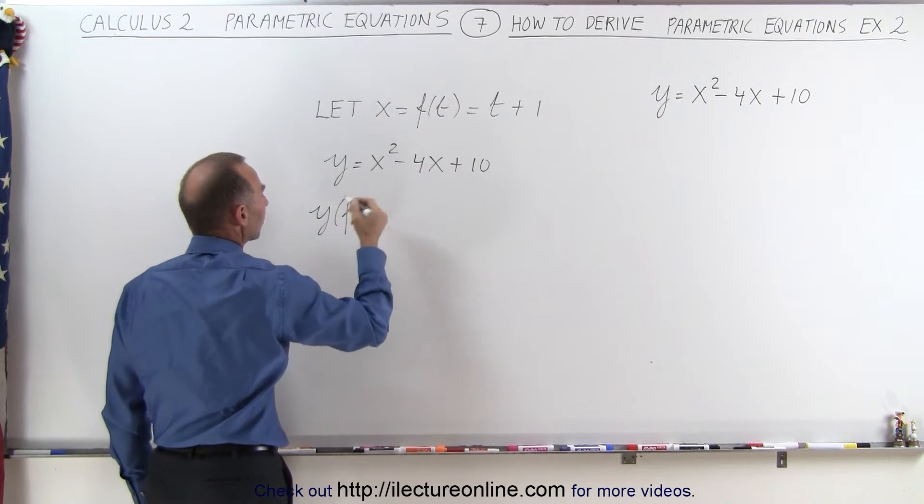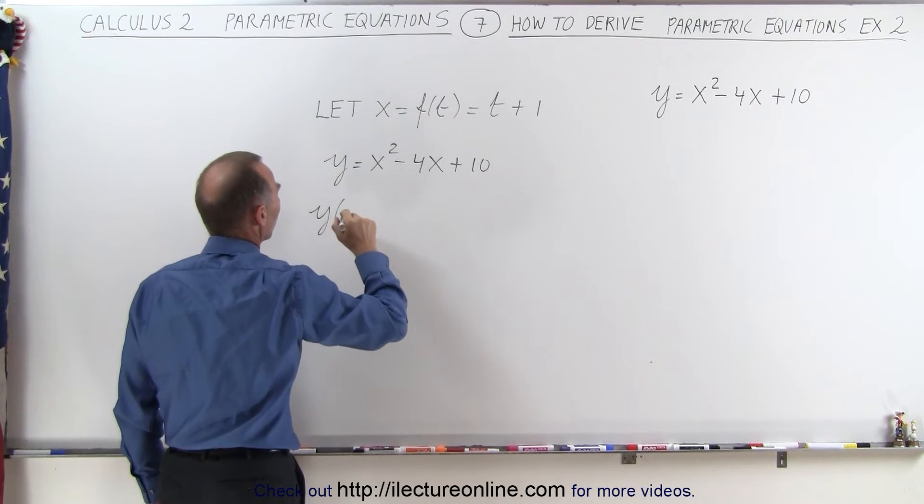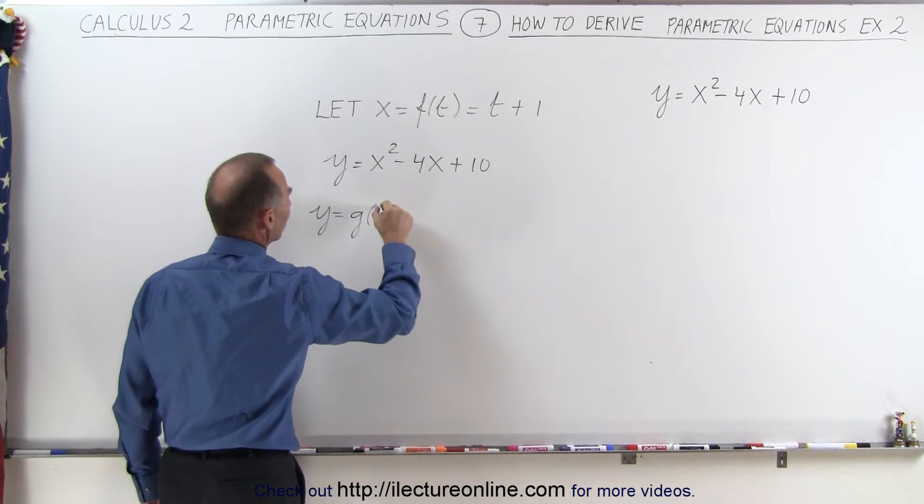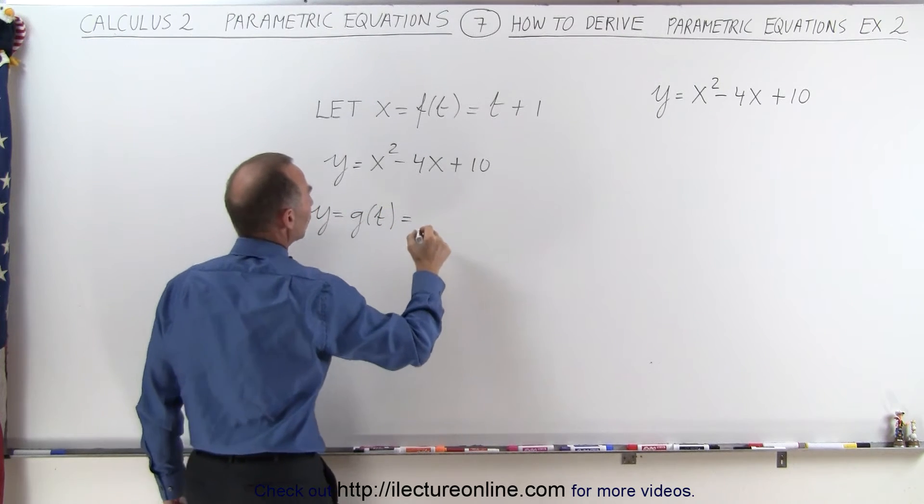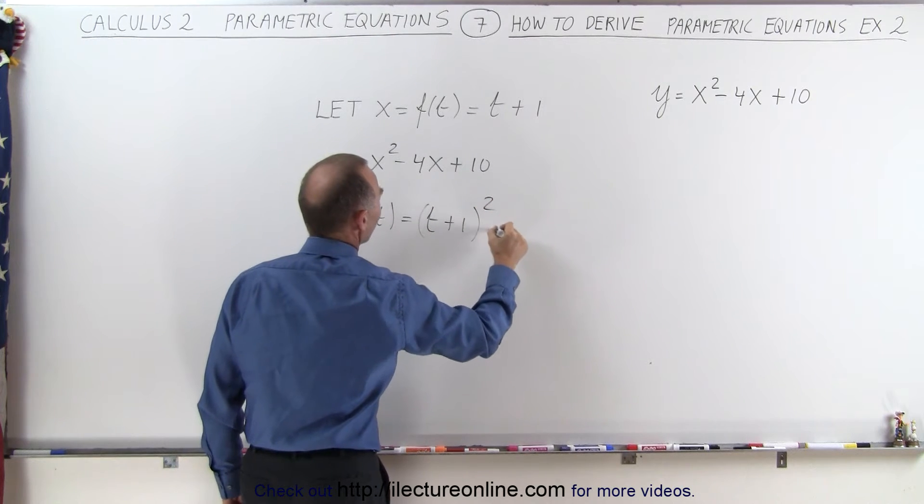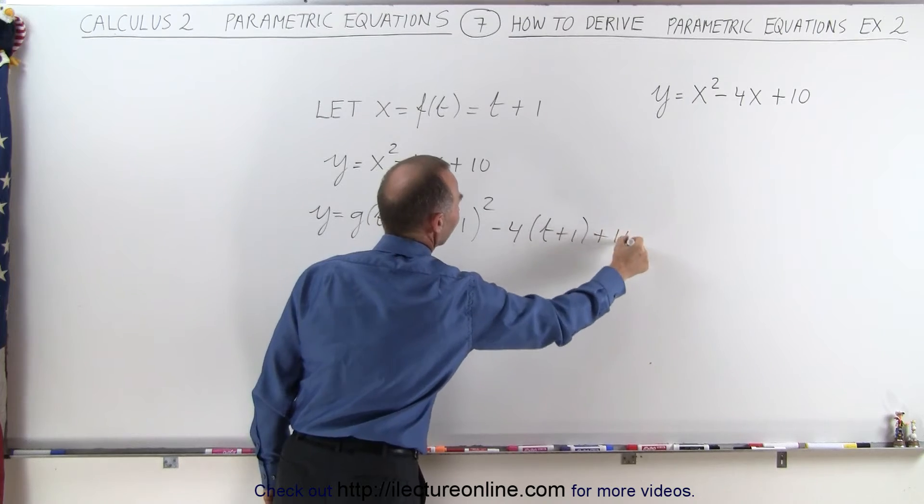So y now, which is going to be some function of t, and to differentiate it from that function, let's call it y being equal to g of t. Let's write it like that, which is equal to t plus 1 quantity squared minus 4 times t plus 1 plus 10.